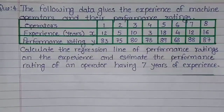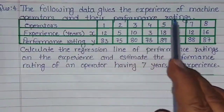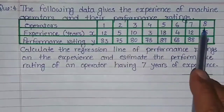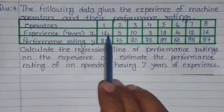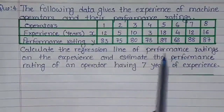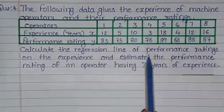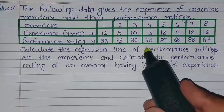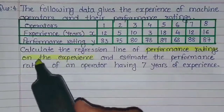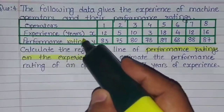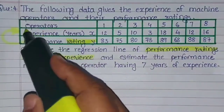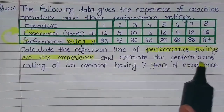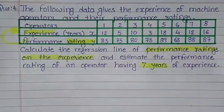Friends, in Exercise 3.1, sum number 4, the following data gives the experience of machine operators and their performance ratings. Operators are given here 1 to 8, then their experience in years is given and the performance rating y is given. We need to calculate the regression line of performance rating on experience, and estimate the performance rating of an operator having 7 years of experience.